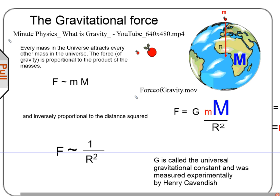Putting both of these together, we can come up with the law of gravity: the force of attraction between any two masses is given by this equation, where G is called the universal gravitational constant - a constant that has to be measured experimentally. Little m is the mass of one object, big M is the mass of the other, and R is the distance between them from center to center.